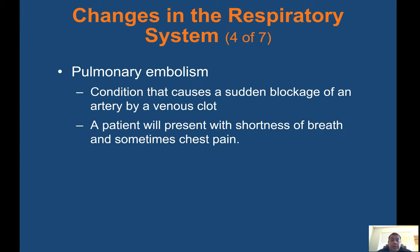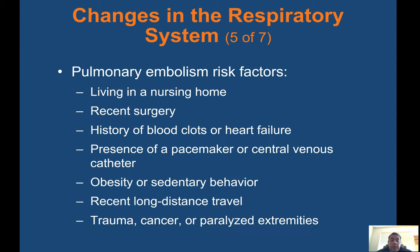Pulmonary embolism is a condition that causes a sudden blockage of an artery by a venous clot. The patient will present with shortness of breath and sometimes pinpoint chest pain with sudden onset. There's not much you can do in the field except provide oxygen and immediate transport to the hospital. Risk factors include living in a nursing home, recent surgery, history of blood clots or heart failure, presence of a pacemaker or central venous catheter, obesity, sedentary behavior, recent long-distance travel, trauma, cancer, and paralyzed extremities. For example, blood can pool in the lower legs during a long flight, coagulate into a clot, and then travel to the lungs or heart when the patient stands up.